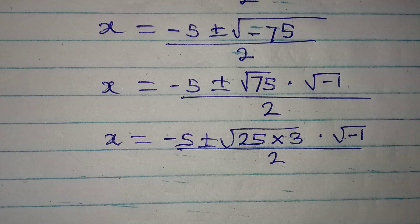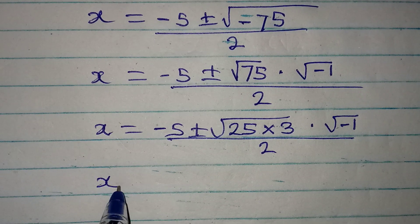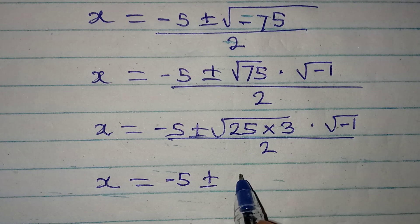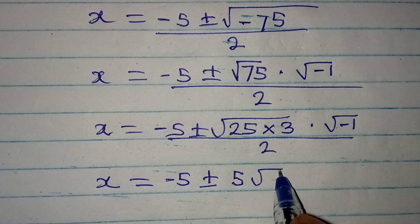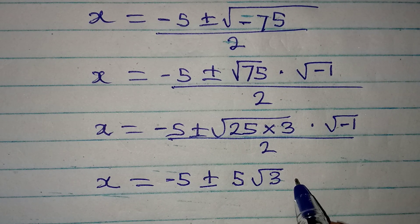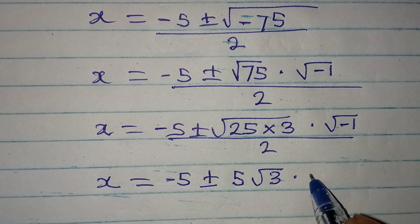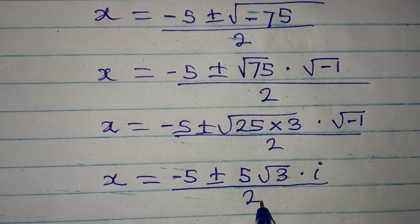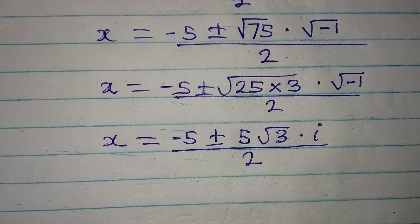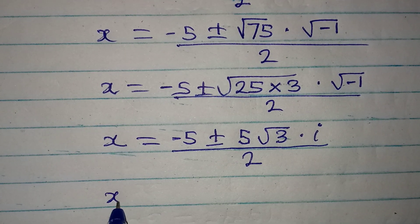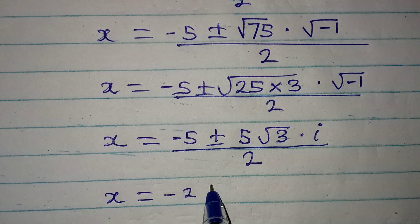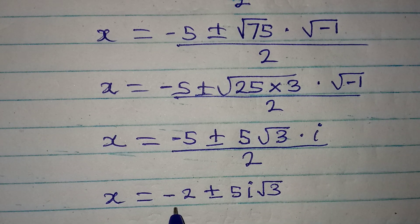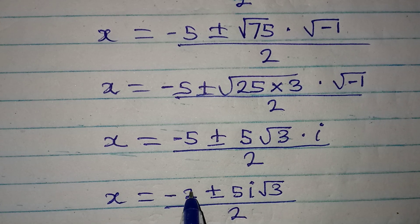So x is equal to minus 5 plus or minus — the square root of 25 is 5, then we have root 3, and the square root of negative 1 is i, the imaginary number — all over 2. This means that x is equal to minus 5 plus or minus 5i root 3, all over 2.